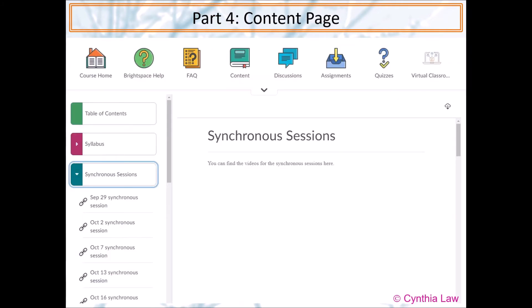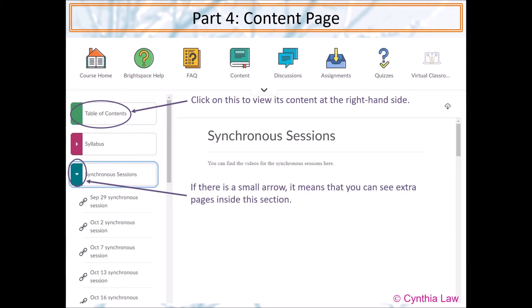The content page. There is a manual at the left-hand side of the page. If you click on one of them, then you can see its content at the right-hand side. If you click on the arrow, it means that you can see extra pages that are inside the section.